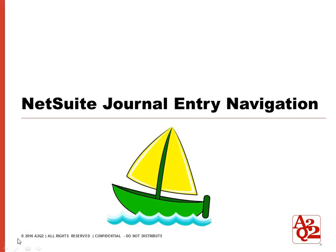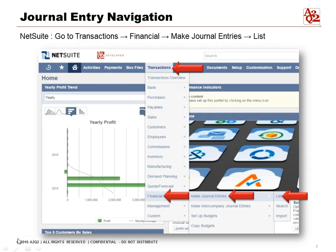Let's talk about the NetSuite Journal Entry Navigation and tips for that. What you see on screen is the initial login when you log in, and at the top menu bar you can go to Transactions, Financial, Make Journal Entries, and List.